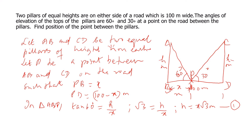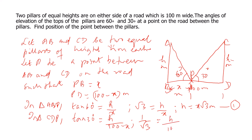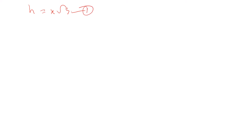In triangle CDP, we have 30 degrees. So tan 30 equals opposite by adjacent, which is h by (100 minus x). Tan 30 is 1 by root 3, equal to h divided by (100 minus x). Cross multiplying, we get root 3 times h equals 100 minus x. This is equation number 2.